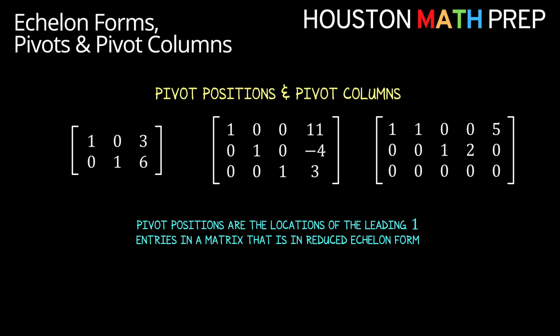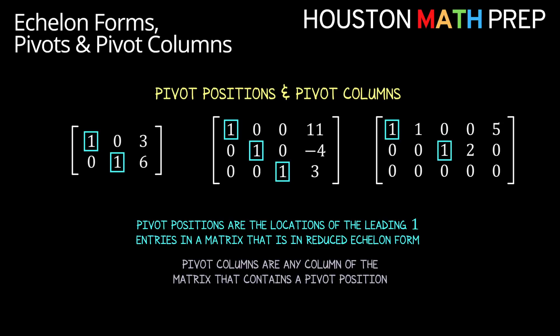If our matrix is in echelon form, then our leading entries are often referred to as pivot positions. And in reduced echelon form, like here, all of the leading ones are pivot positions. Any column that contains a pivot position is just then called a pivot column. So here you can see we've marked each column that's a pivot column with an arrow, and any column that doesn't contain a pivot position we've marked with an X, and those are not pivot columns.